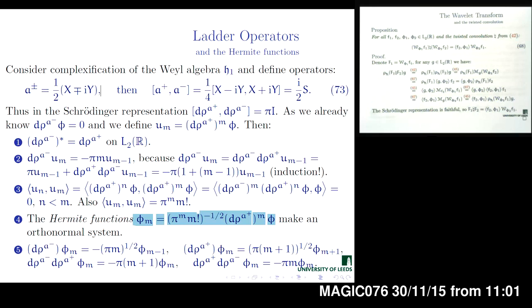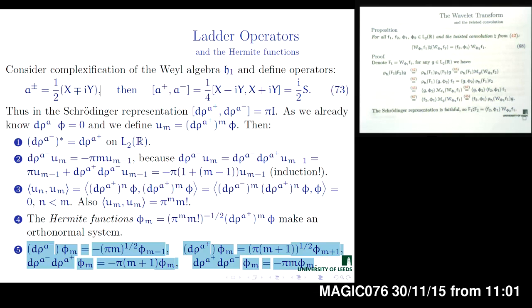Furthermore, because the Hermite functions are just constant multiples of the previous functions O_M, we can easily deduce the action of operators A-minus and A-plus on the Hermite functions, very straightforwardly from the previous relations.